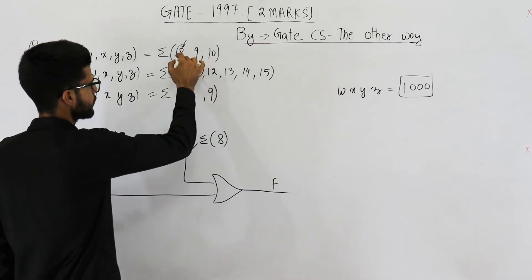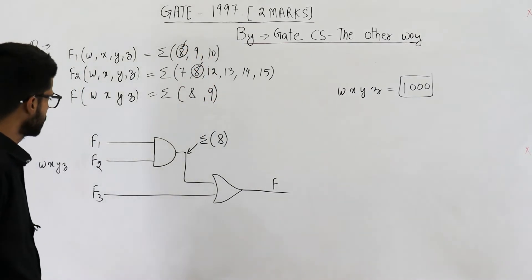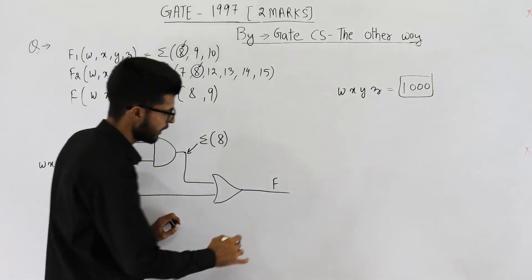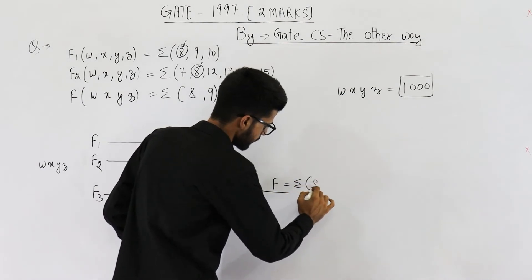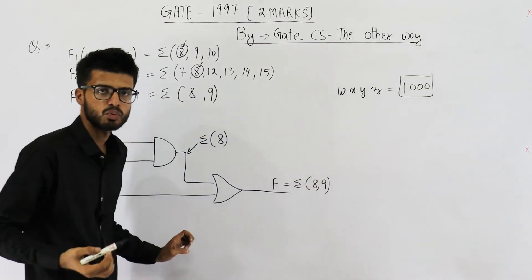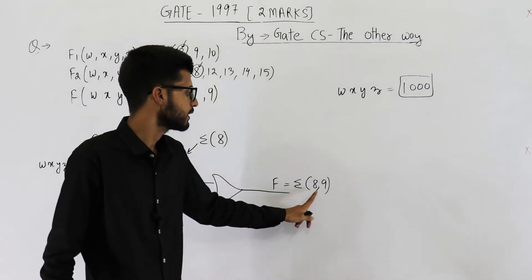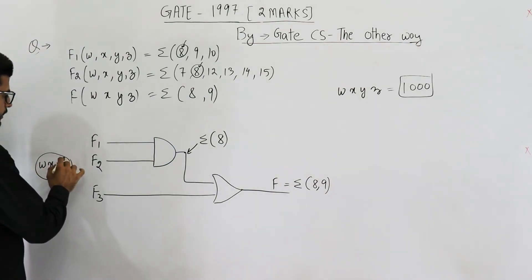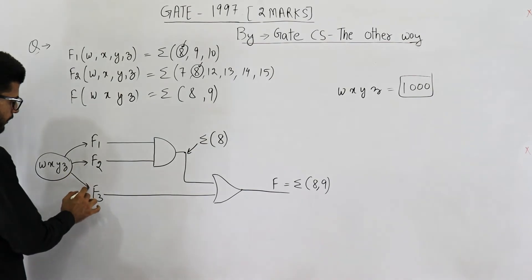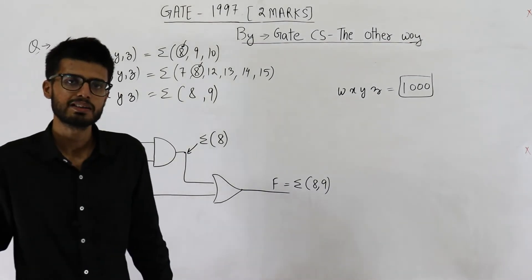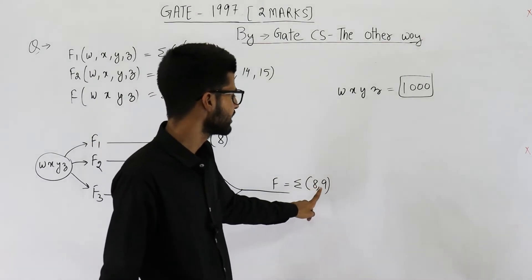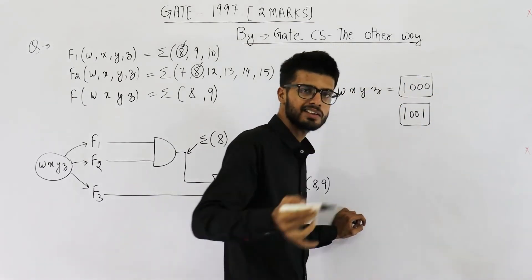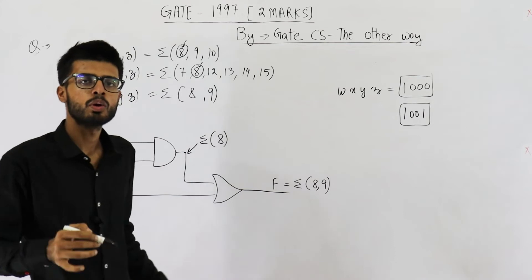The only common point between these two functions is 8. Now you can see that F is given as a function which outputs high on inputs 8 as well as 9. That means these inputs W, X, Y, Z are given to all three functions. Whenever the values of W, X, Y, and Z form either 8 or 9, this OR gate is going to give a high.